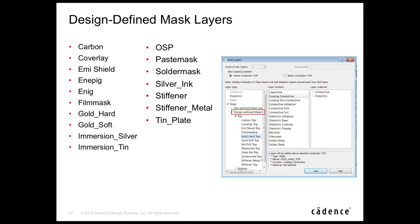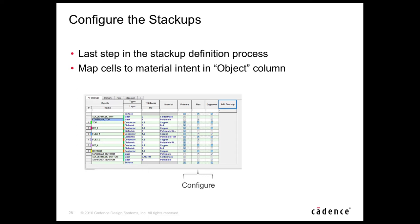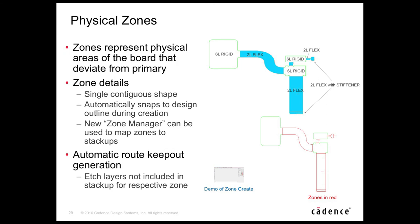The site-defined mask layer file is recommended to control layer entry and prevent naming mistakes. Once mask layers and stackups are defined, configure each column: for primary, all electrical and dielectric layers are enabled, cover lay is disabled, and solder mask kept enabled. For flex, enable only the flex core layers (flex one and flex two), and for the edge connector zone, additionally enable the stiffener bottom. Once stackups are defined, map them to physical zones — a zone being a deviation from primary.